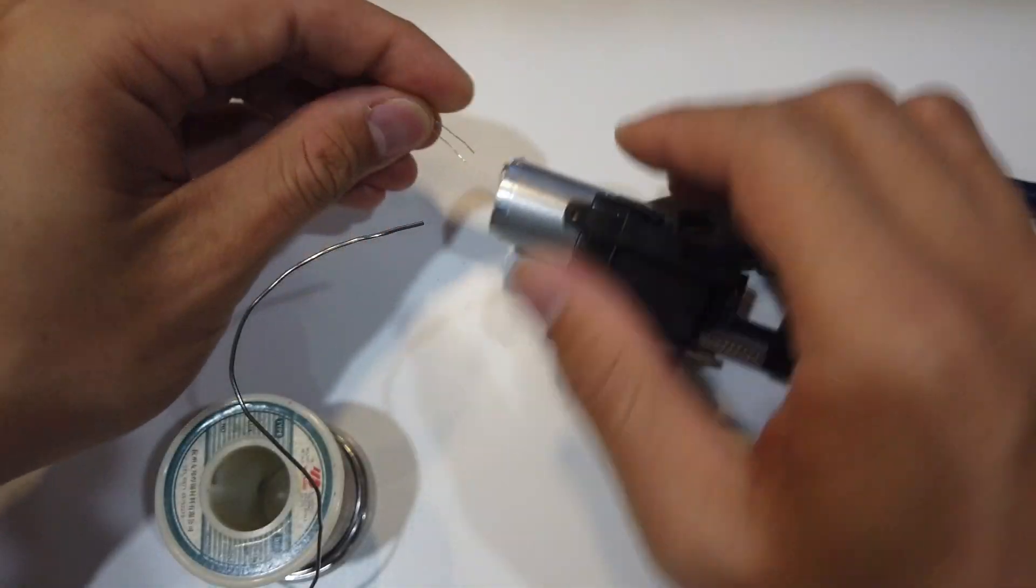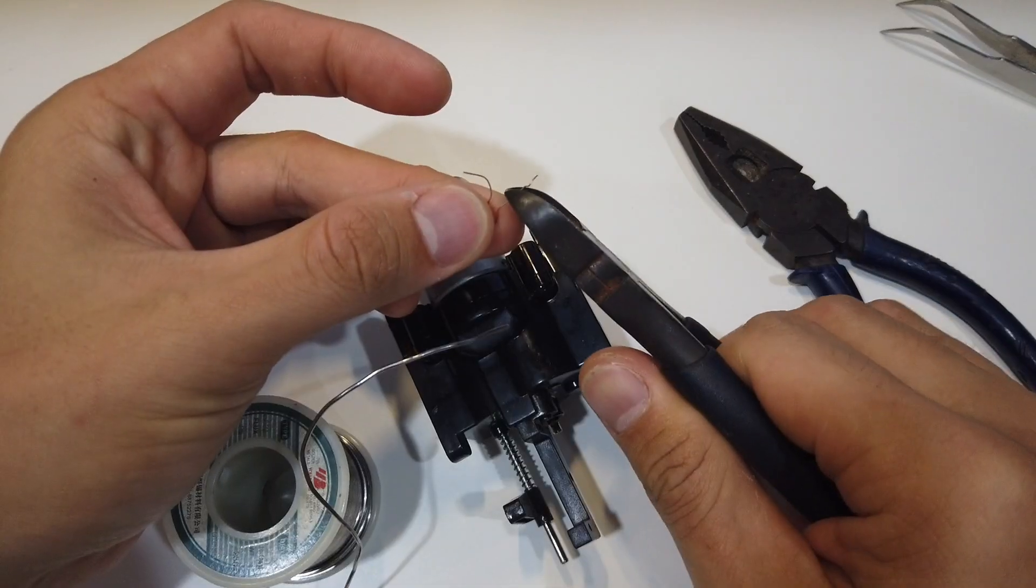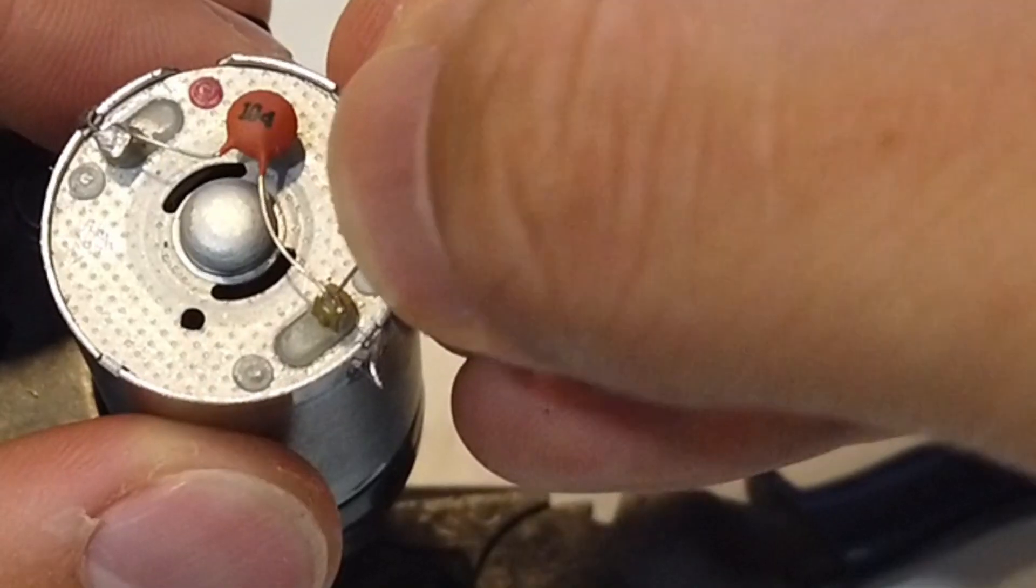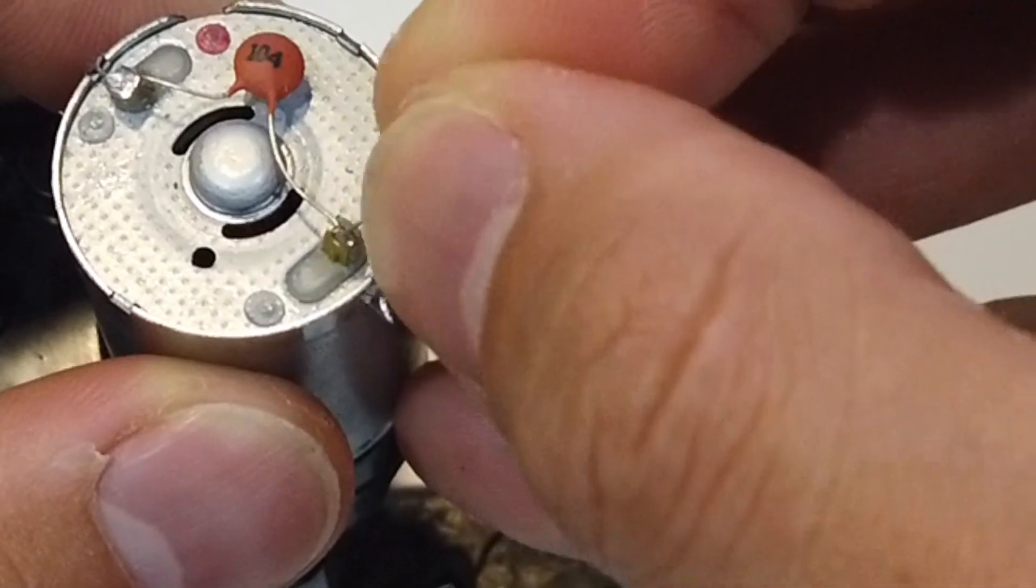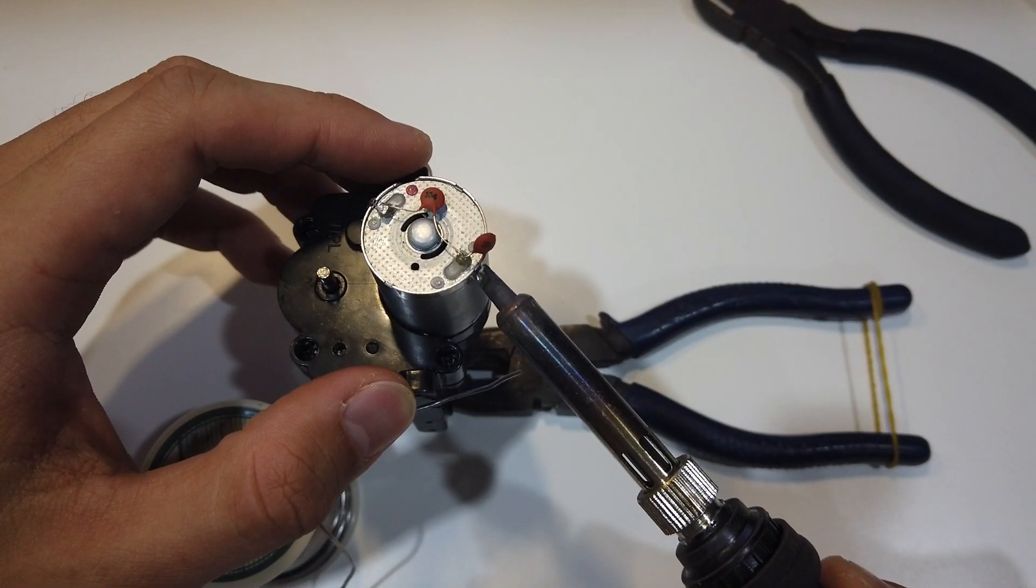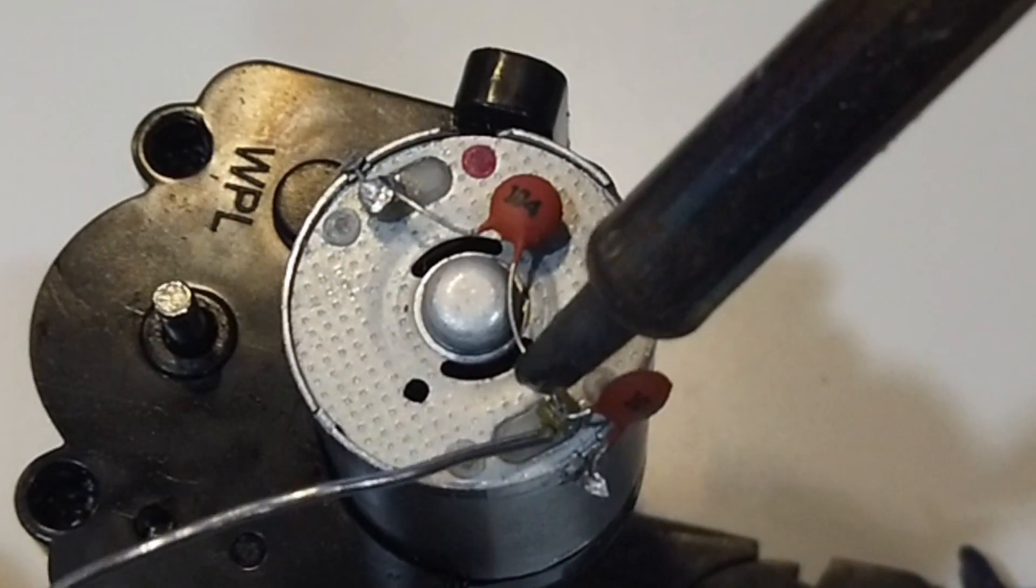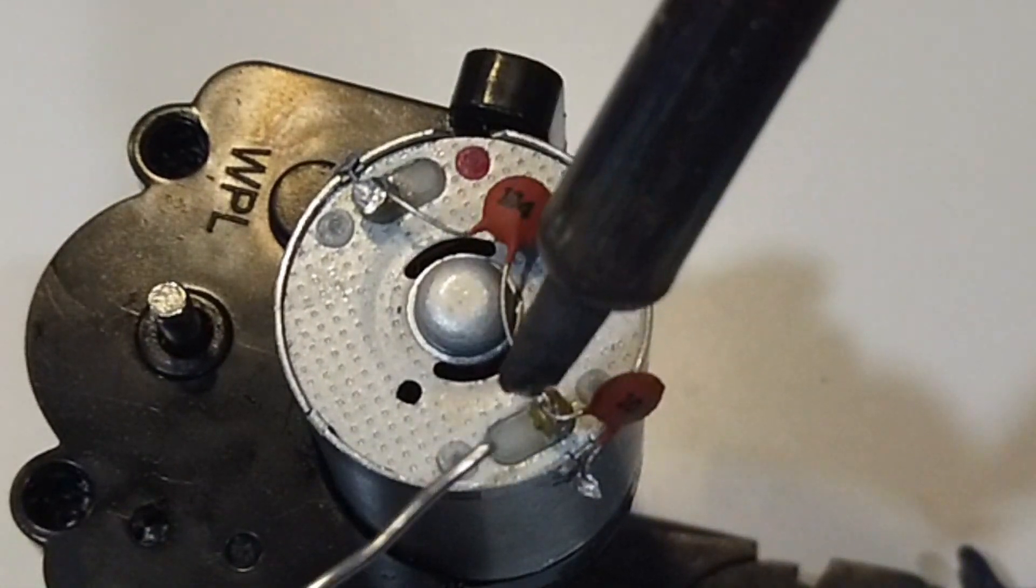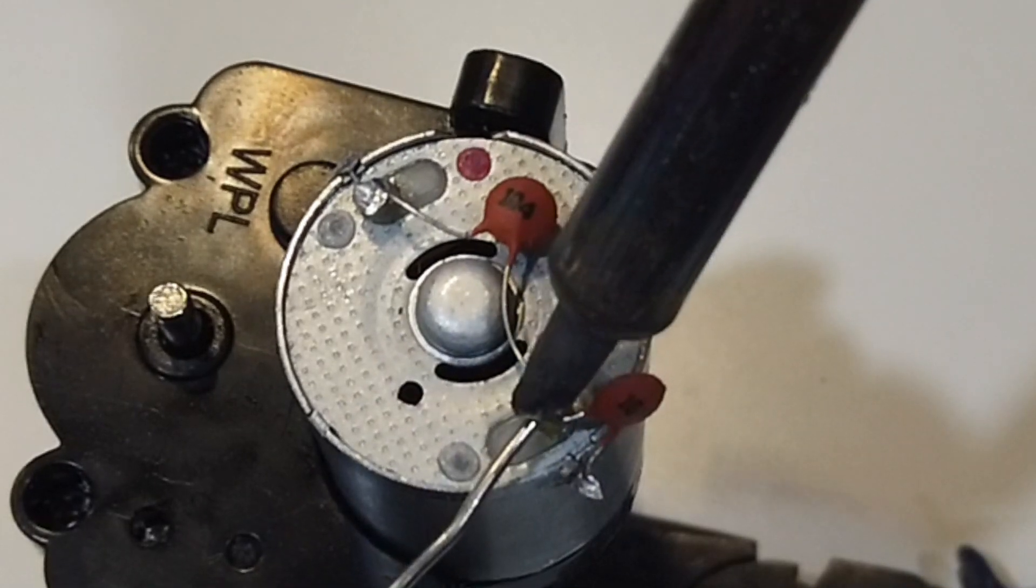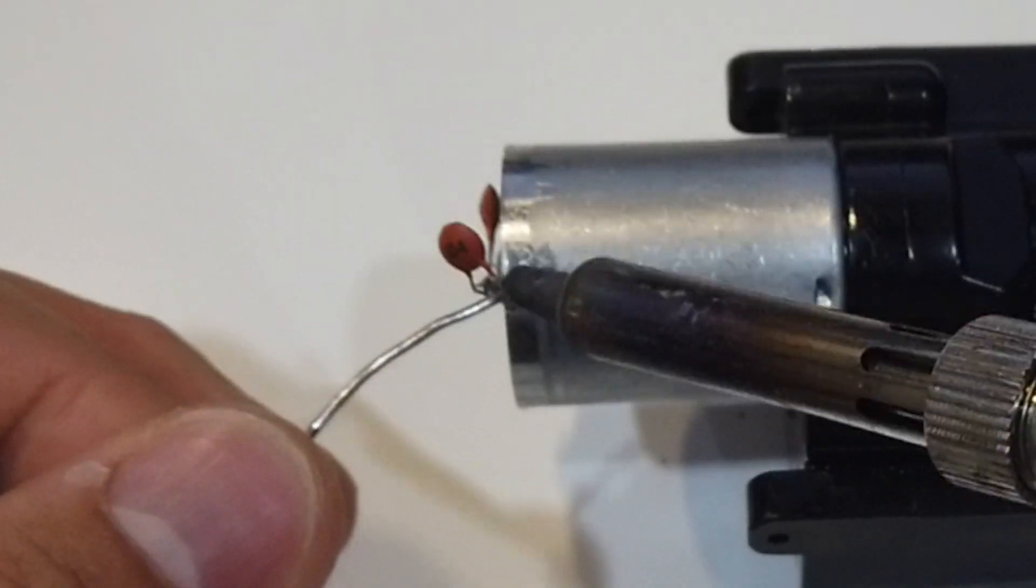The other side, you take a 104 capacitor. Again, there is no polarity. Alright, I am just going to cut it shorter. Once it is firm and not touching anything else, and then secure the side on the motor terminal itself as well. Solder it properly.